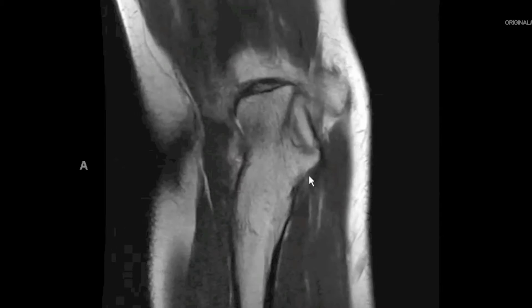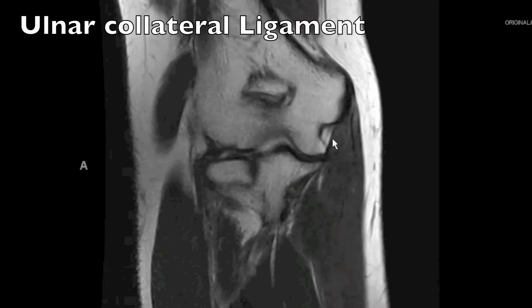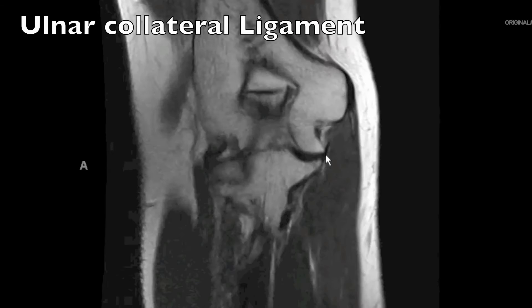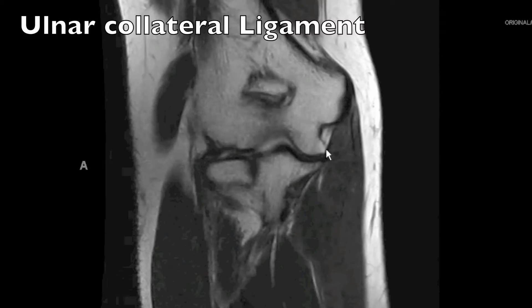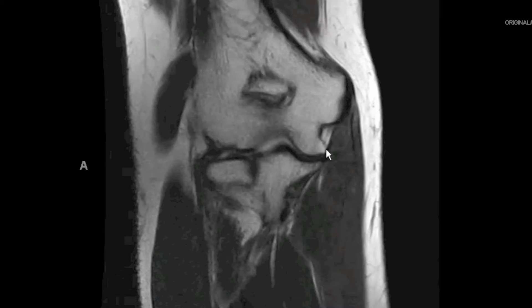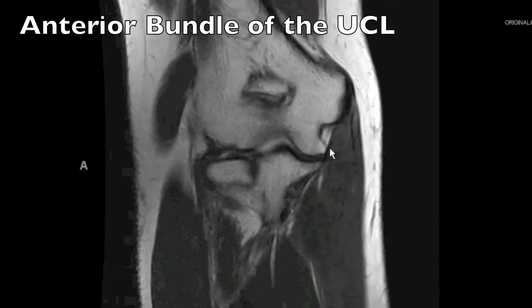In terms of our ligamentous anatomy on our coronal images, medially we see this structure extending from the inferior margin of the medial epicondyle of the distal humerus towards the sublime tubercle. This is the anterior bundle of the ulnar collateral ligament. The ulnar collateral ligament has three bundles: an anterior bundle, a posterior bundle, and a transverse bundle. The bundle we see to advantage on our coronal MR images is the anterior bundle of the ulnar collateral ligament.